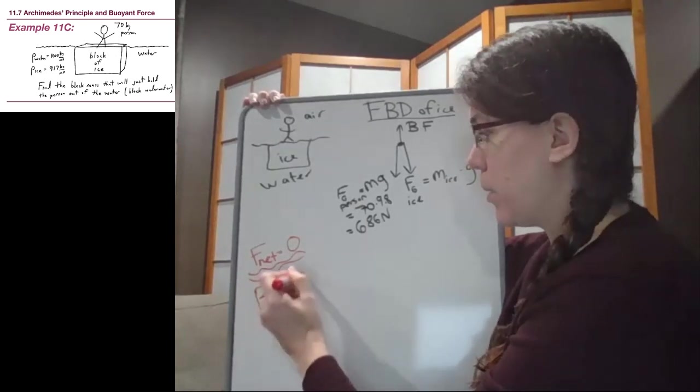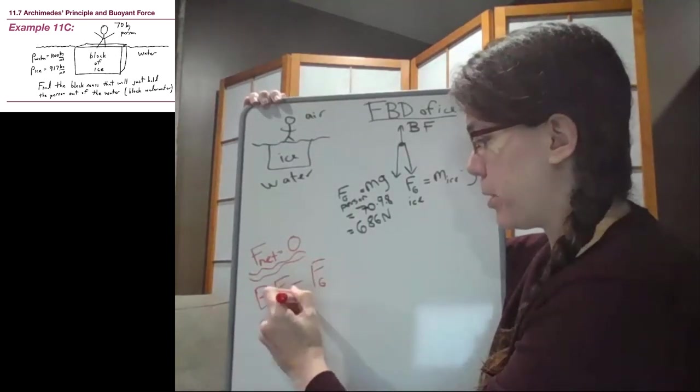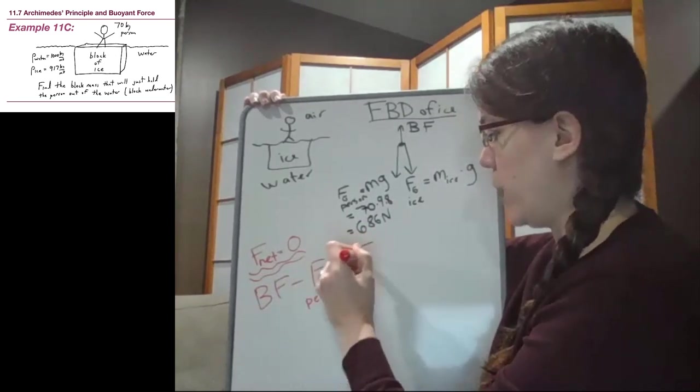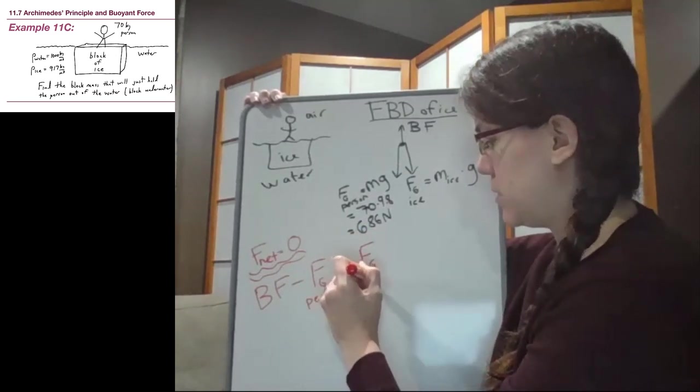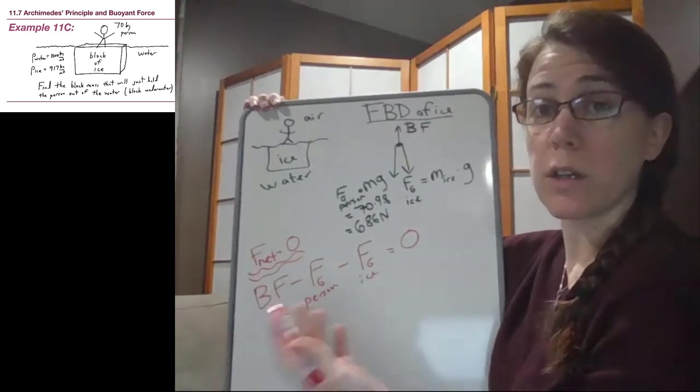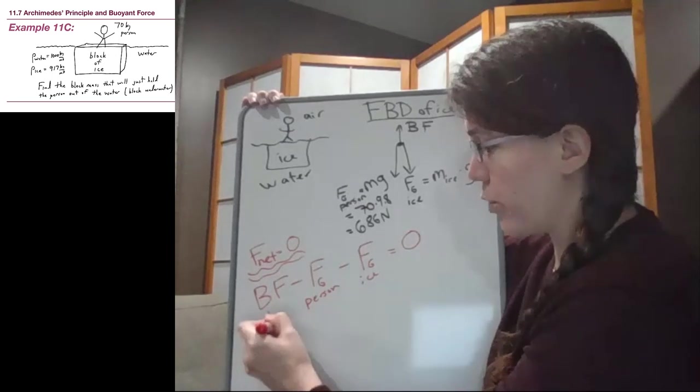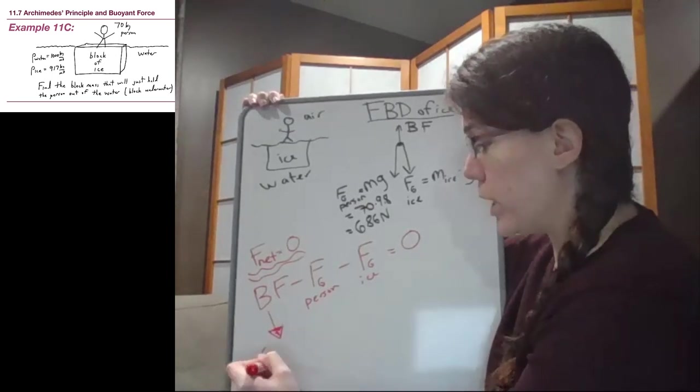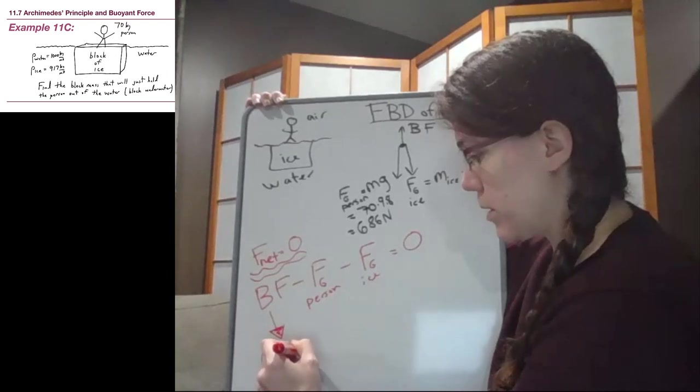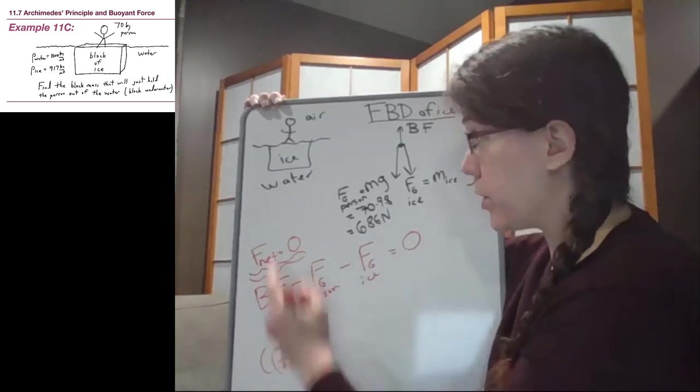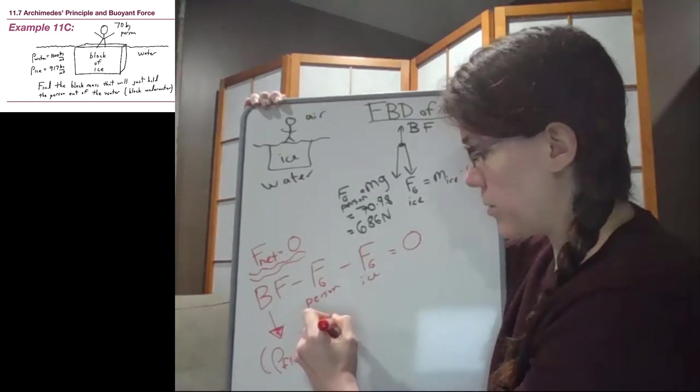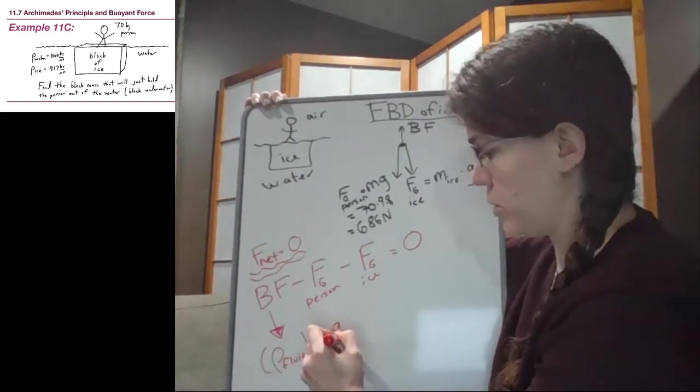So buoyant force minus the weight of the person minus the weight of the ice equals zero. So we can elaborate a little bit here. For the buoyant force, we can write that out, that the density of the fluid times the volume of the object, the volume of the ice here, times 9.8, I'm just going to write times g.